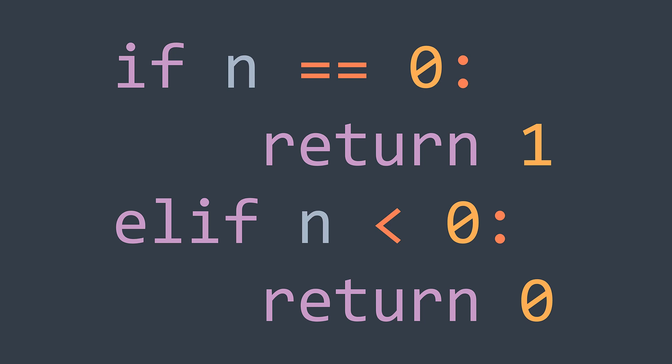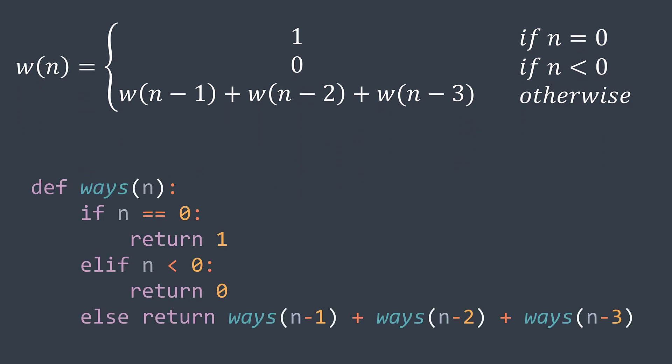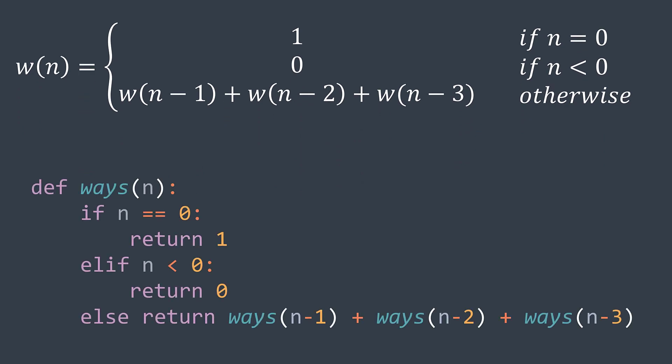What we did here is that we kept dividing the problem into smaller and smaller subproblems until we reached problems small enough to be solved directly. The recurrence relation of our solution is: ways of n equals one if n is zero, zero if n is negative, and ways of n minus one plus ways of n minus two plus ways of n minus three otherwise. This can easily be implemented in code with a recursive function: if n equals zero return one, else if n is negative return zero, else return ways of n minus one plus ways of n minus two plus ways of n minus three. This solution works and gives us the number of ways to reach step n — we could solve this problem using recursion alone.